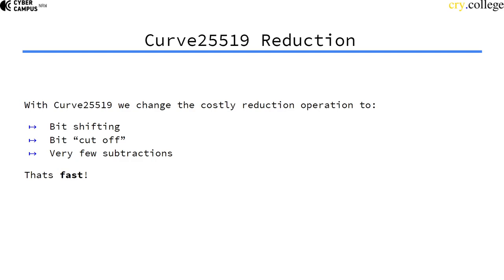So with Curve25519, we changed the costly reduction operation by two bit shifting, bit cutoff, and very few subtractions. And the shifting and the cutoffs,